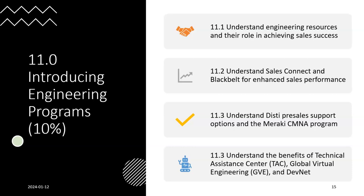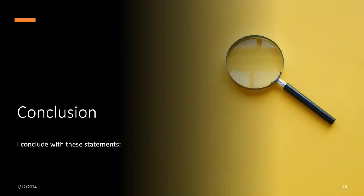The eleventh and final domain is Introduction to Engineering Programs. Since this certificate is built especially for engineers, they need to know about the different engineering resources and their roles in achieving sales success. This includes understanding Sales Connect, the Black Belt program for enhanced sales performance, Disti pre-sales support options, the AMBIRAKI and CMNAS programs, and the benefits of the Technical Assistance Center (TAC) for debugging and problem resolution, as well as Global Virtual Engineering and DevNet.